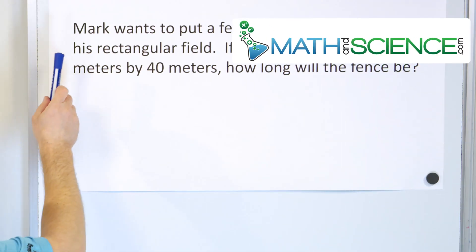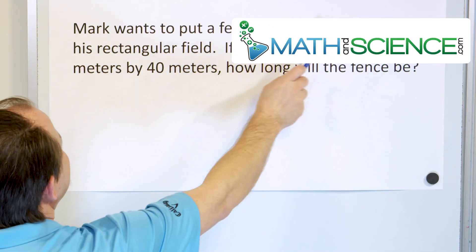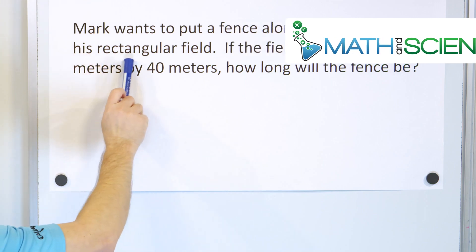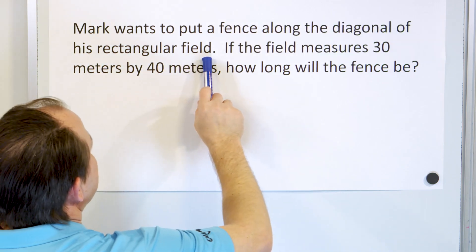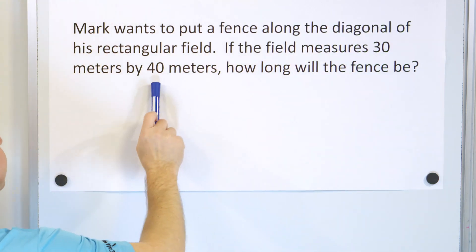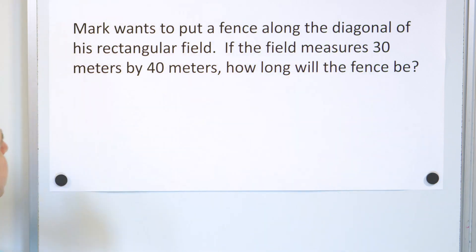Here's our first example. Mark wants to put a fence along the diagonal of his rectangular field. If the field measures 30 meters by 40 meters, how long will the fence be?